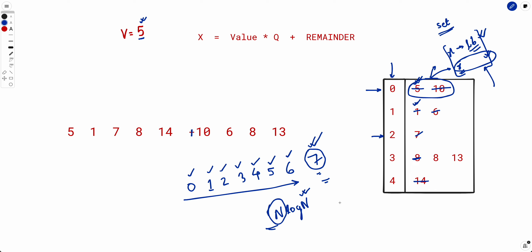There is also an O(n) solution using a two-pointer approach. Because the queries are strictly increasing — each time we query for something greater than the previous — we never need to restart the search. This avoids the log n per query. I encourage you to try coding that O(n) solution yourself. For now, we'll implement the O(n log n) solution.